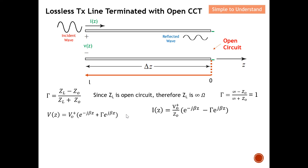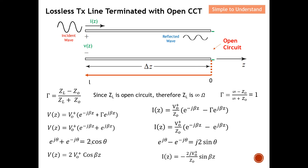Now I'm going to replace the reflection coefficient with one in the previous set of equations. Basically what I need to do is remove the reflection coefficient term and I obtain these two sets of equations. From the earlier mathematical discussion, I also showed that I can replace certain terms using cosine θ, where θ equals β·z. After substituting, I get these two final sets of equations for voltage and current.